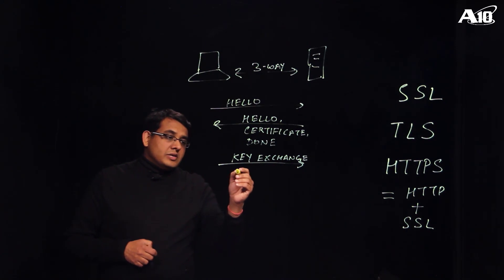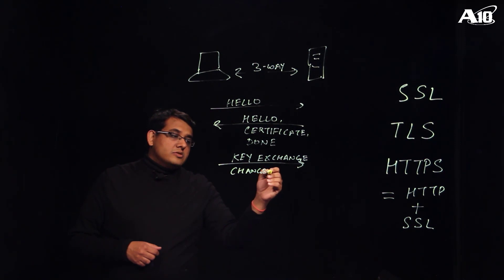It will also send a change cipher spec message which will indicate to the server that any subsequent messages from the client will now be encrypted. And finally, it will send a finished message. This is the first encrypted message from the client to the server.